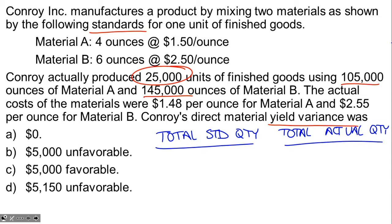The formula we're going to use is: actual quantity minus standard quantity, multiplied by the weighted average standard price of the standard mix.